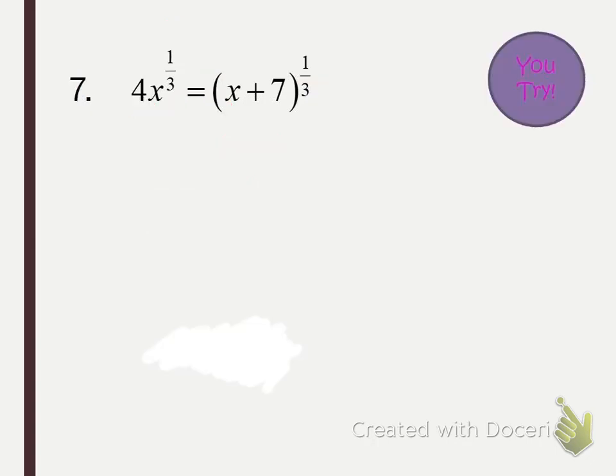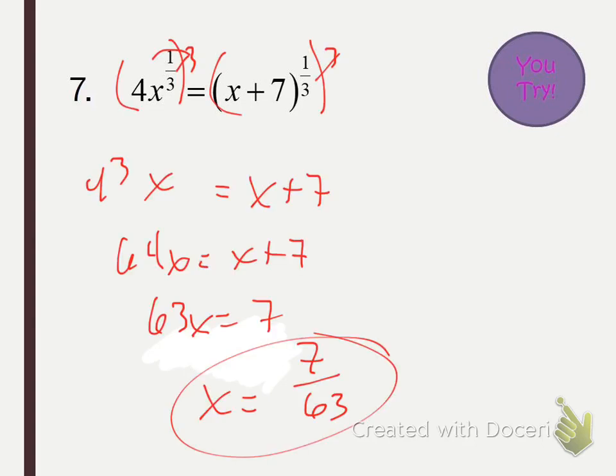A quick check confirms x equals 1 is a valid solution. You give it a shot — stop the video and start it back up. For number 7, you just cube both sides. Remember to cube the 4 to get 64, giving 64x equals x plus 7. Solve for x and you should get 7 over 63, which is not an extraneous solution.